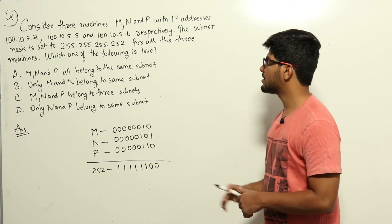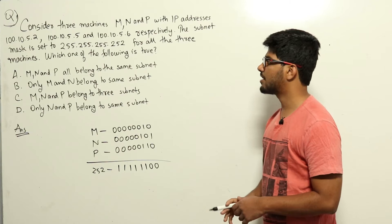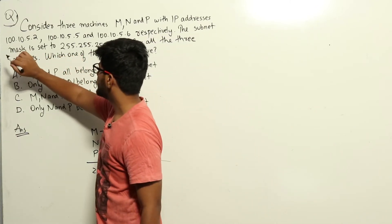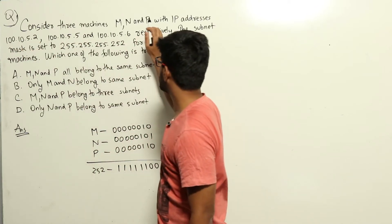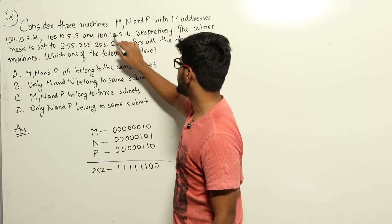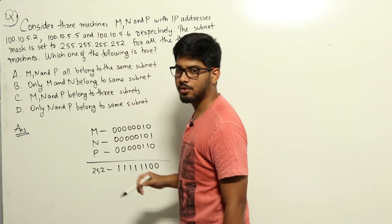Now we will do that bitwise AND of subnet mask and IP addresses and find out the network IDs. If you see, the first 24 bits of all the IP addresses are the same: 100.10.5, 100.10.5, 100.10.5. That is same for all three.